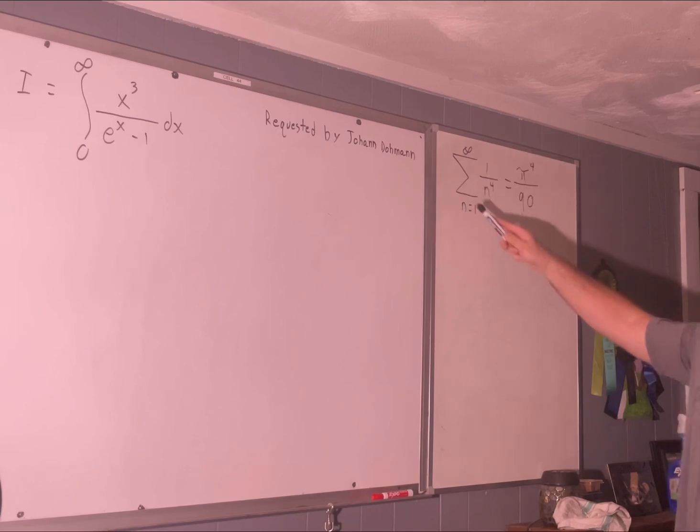And to solve it we're going to be using this fact. Don't ask me to prove this because I'm not going to do it. You can find derivations of that on the internet. I will admit that I've never seen the derivation of that. But we're going to be using it. The sum of the reciprocals of the fourth powers of the integers is equal to pi to the fourth over 90.